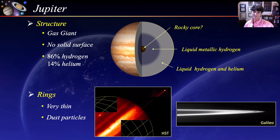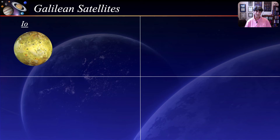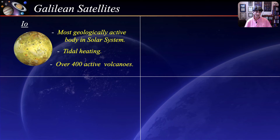Jupiter's four main moons are called the Galilean satellites in honor of Galileo who discovered them in 1610. Their orbits all lie along Jupiter's equatorial plane and are easily seen through a small telescope. The innermost moon is Io — easily the most geologically active body in the solar system. The volcanic activity is caused by extreme tidal forces from the gravitational pull between Io and Jupiter, which stretch and squeeze Io. This tidal friction causes Io's interior to heat up in a process known as tidal heating. There are over 400 active volcanoes on Io, and the volcanic plumes of sulfur and sulfur compounds give it its yellowish color.